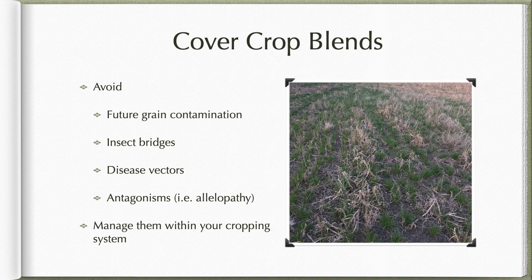Some things we want to avoid when devising cover crop blends: first, avoid future grain contamination. If we have a cereal rotation — wheat, barley, oats, triticale — and we use fall rye as a cover crop, there's a really good chance that fall rye is going to overwinter and end up getting into our spring cereal crop. Now we have contamination of fall rye in our cash crop, and that's going to cause downgrading issues.